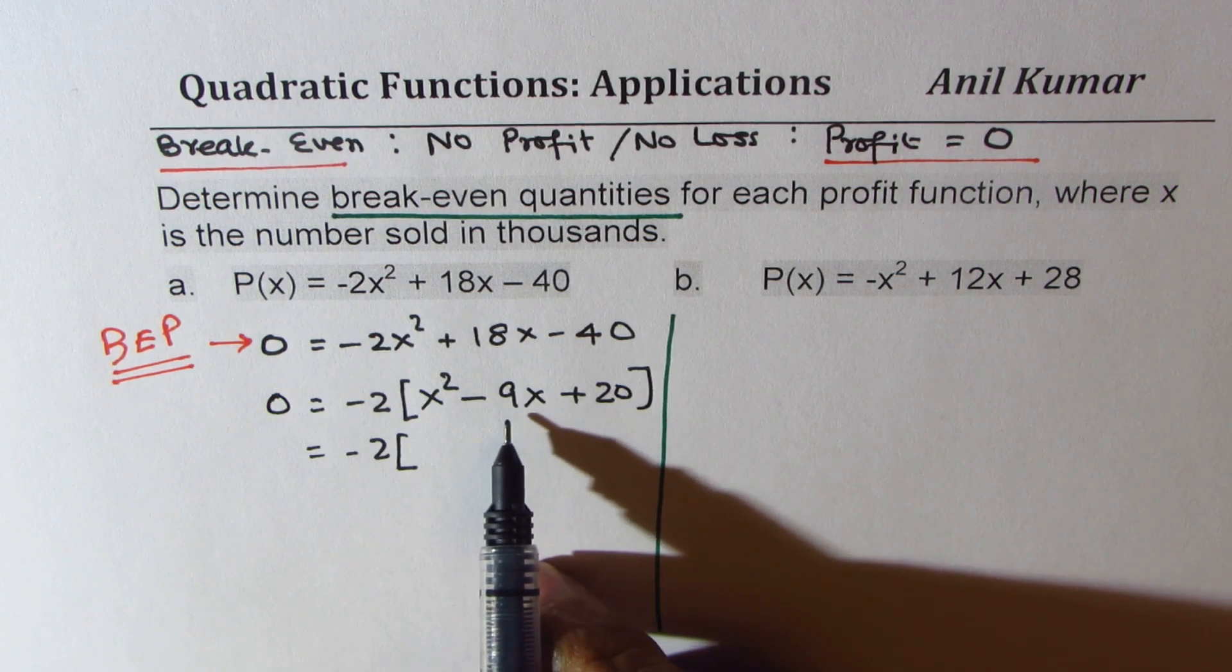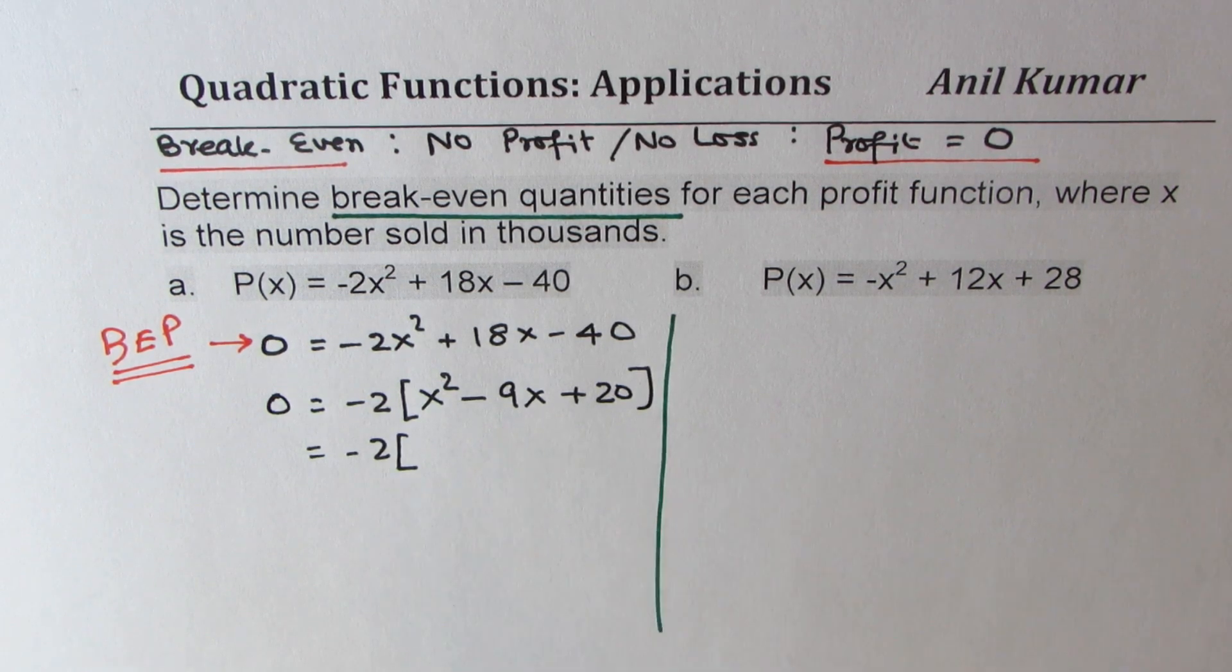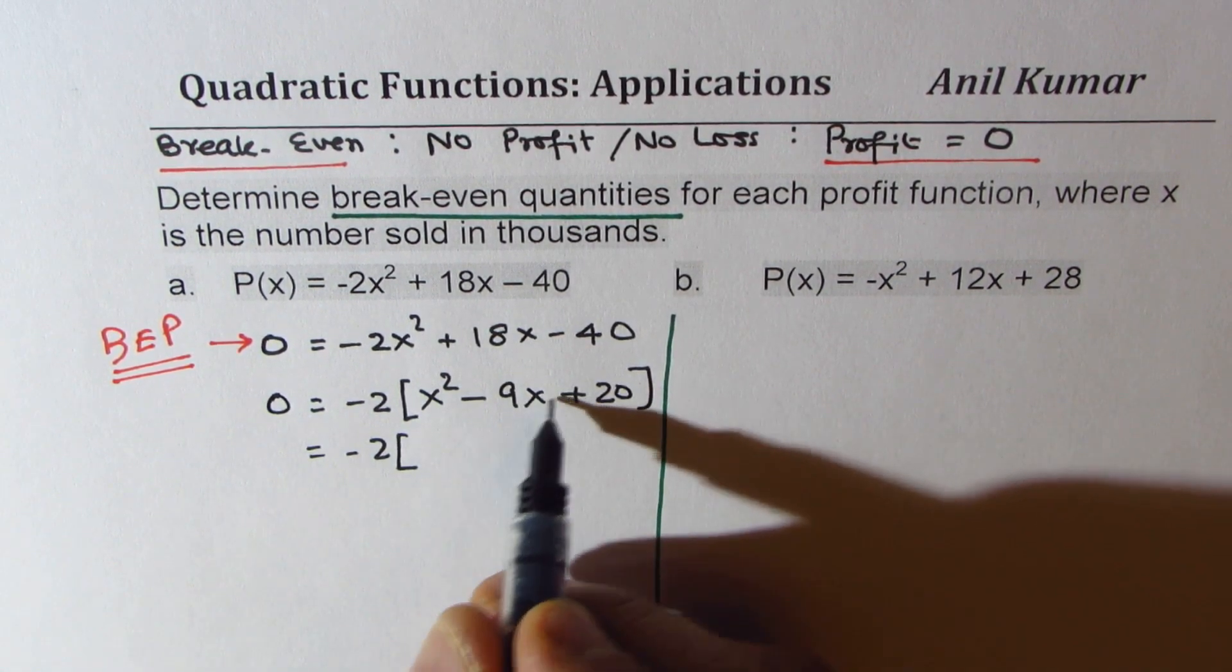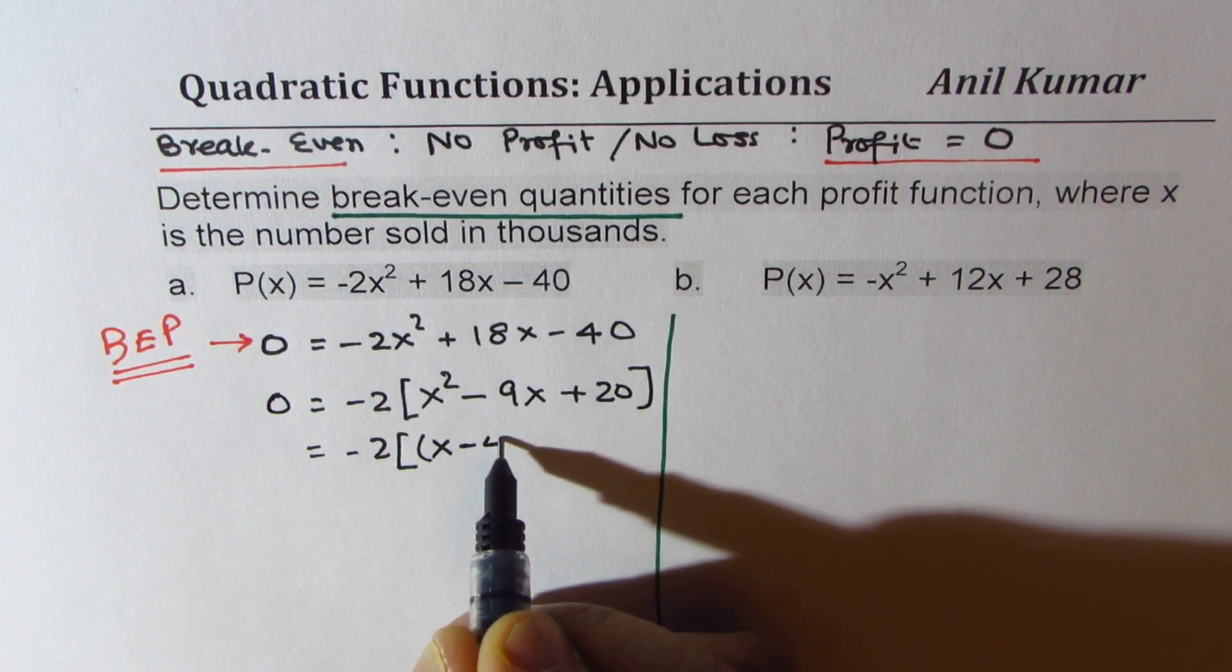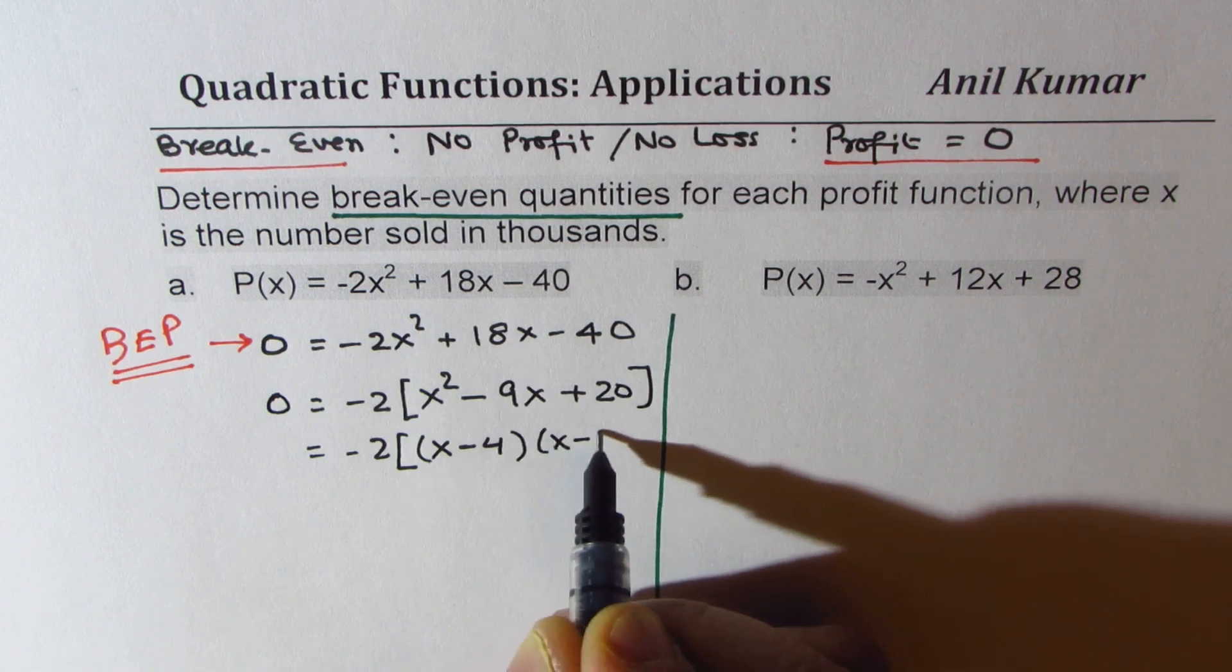Now let's look for a product of 20, sum of minus 9. So product of 20 and sum of minus 9. 10 times 2, 4 times 5, 4 times 5 work, both negative. So we can write this as (x - 4)(x - 5).